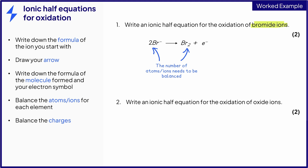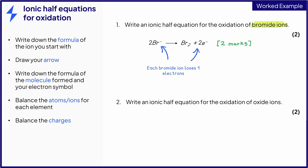Each bromide ion will lose one electron, so if there are two bromide ions each losing one electron, then two electrons are lost in total. This is balanced by placing a 2 in front of the e⁻. This equation will now score you two marks.